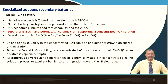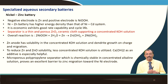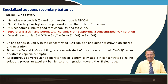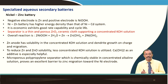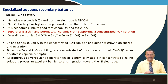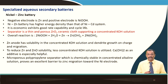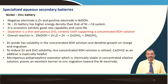Specialized aqueous zinc batteries also include nickel zinc battery, where the negative electrode is zinc and the positive electrode is nickel oxyhydroxide. Nickel zinc battery has higher energy density than the nickel cadmium system. It is economical, exhibits good rate capability and cycle life, and its separator is a thin porous ZrO₂ ceramic supporting a concentrated KOH electrolyte.